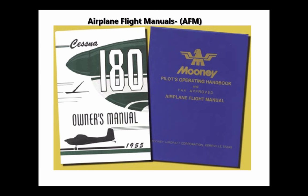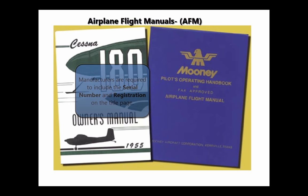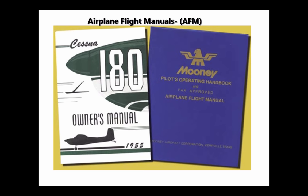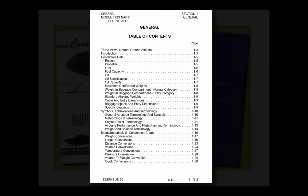While the AFM/POH may appear similar for the same make and model of aircraft, each manual is unique and contains specific information about a particular aircraft, such as the equipment installed and weight and balance information. Manufacturers are required to include the serial number and registration on the title page to identify the aircraft to which the manual belongs. If a manual does not indicate a specific aircraft registration and serial number, it is limited to general study purposes only. Most manufacturers include a table of contents, which identifies the order of the entire manual by section number and title. Usually, each section also contains a table of contents for that section.